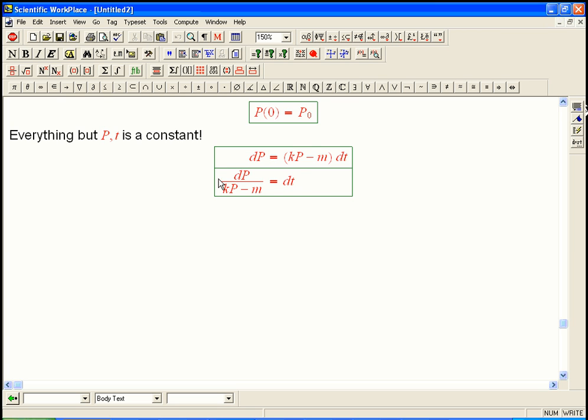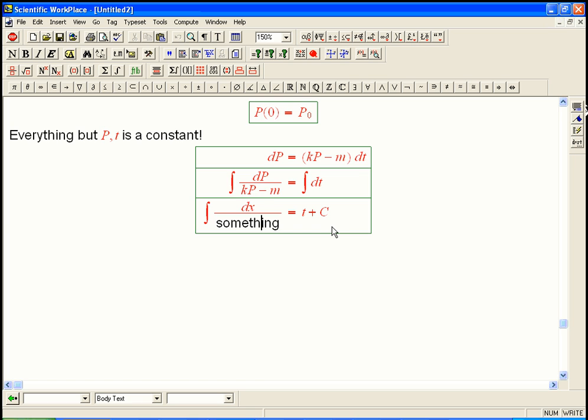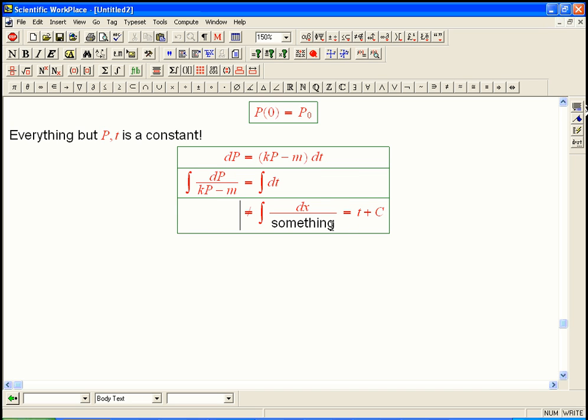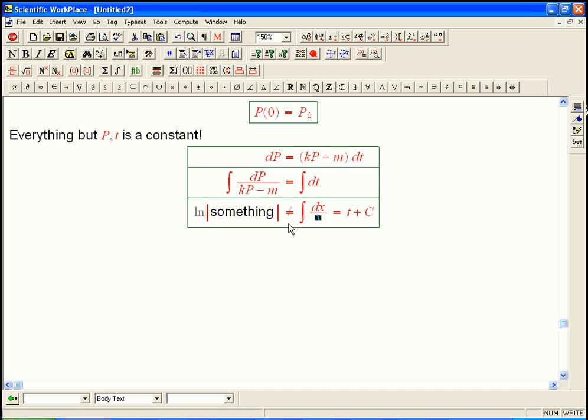And so this is going to be dP over (kP - m) equals dt. So now we're going to integrate both sides. And the right-hand side is easy. That's going to be t plus C. The left-hand side, we have to use u-substitution. So it's really, really important that if I have the integral of dx over some function of x, that is not equal to just ln of absolute value of whatever that something is.